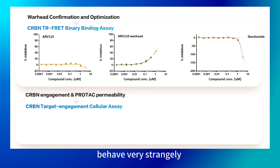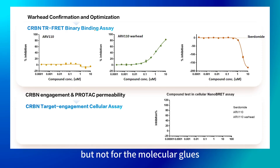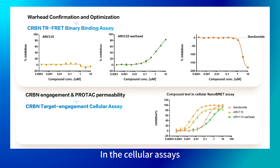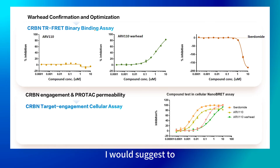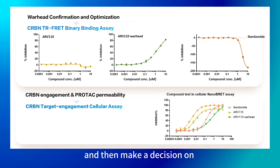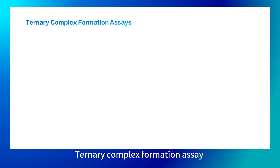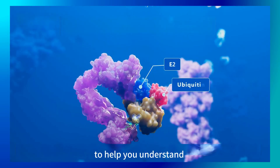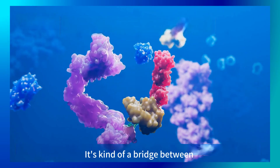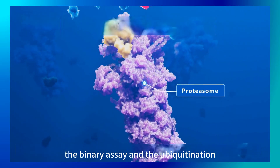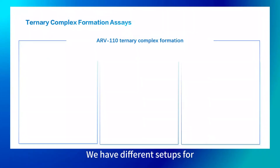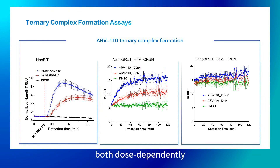Target engagement is always important. Quite surprisingly, we sometimes find that large molecules behave very strangely in TR-FRET assays but not in cellular assays. Most compounds still work well in those situations. When this occurs, I would suggest running both assays, evaluating the assay performance, and then deciding which target engagement assay to use. The ternary complex formation assay is very important for understanding why some molecules are not working — it serves as a bridge between the binary assay and ubiquitination. Different setups can evaluate both the concentration dependence and the kinetics of ternary complex formation.